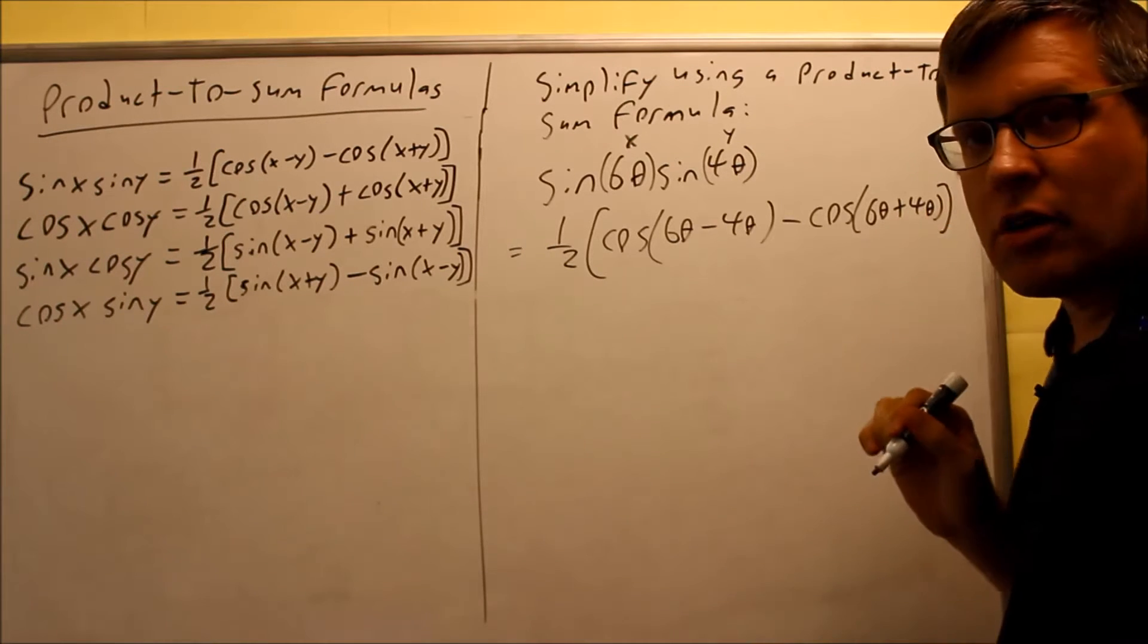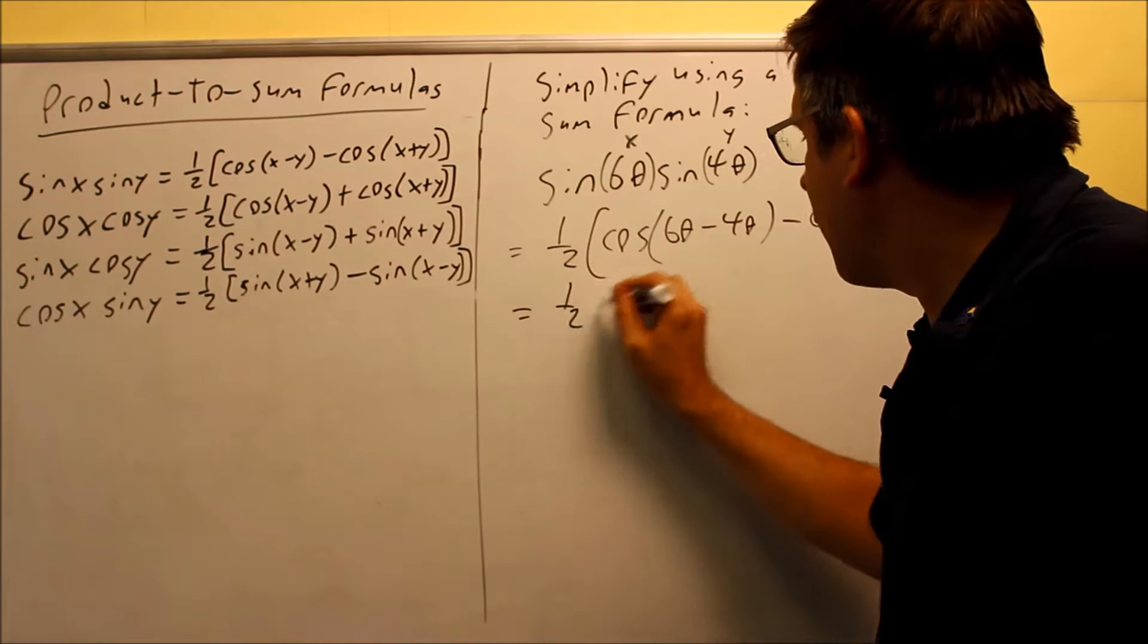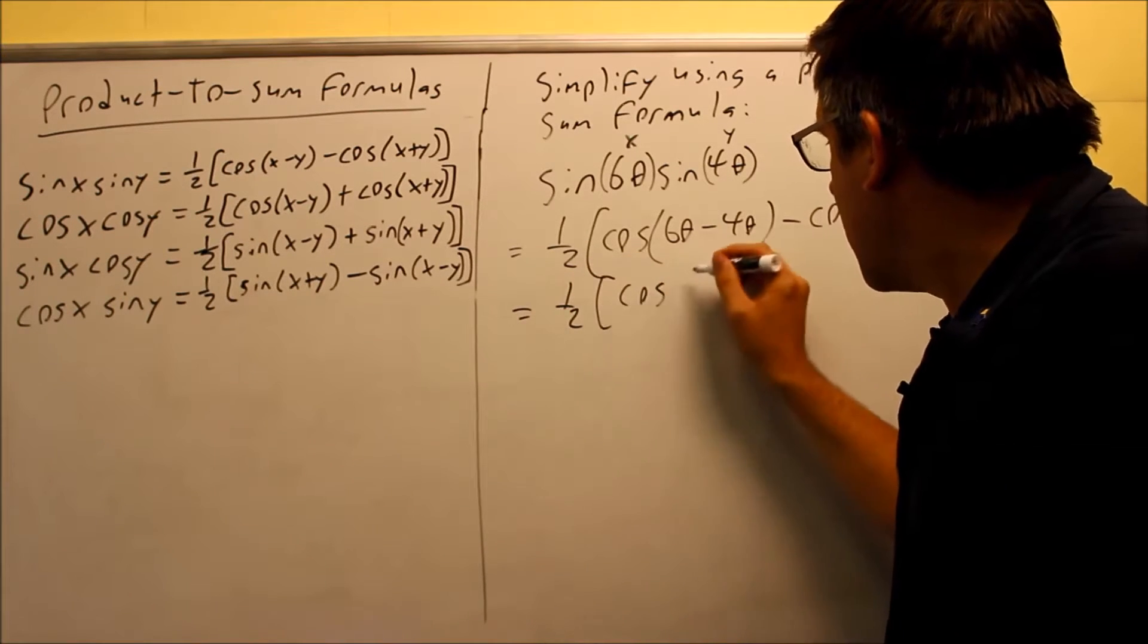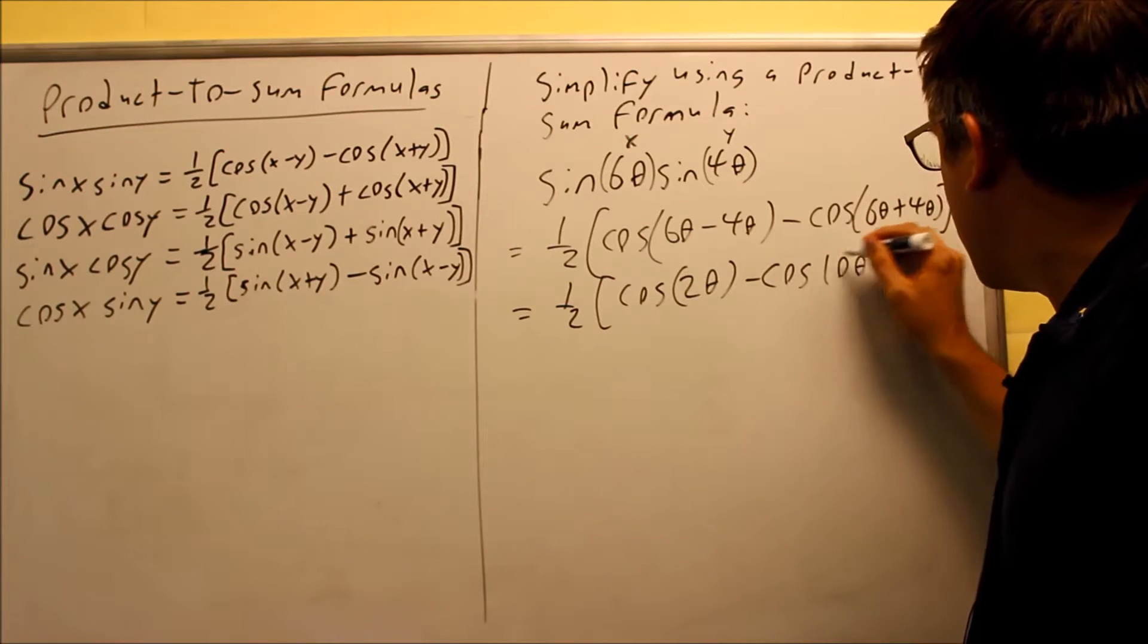Okay? We're going to simplify it now. And when we do, we get 1 half cosine of 2 theta minus cosine of 10 theta.